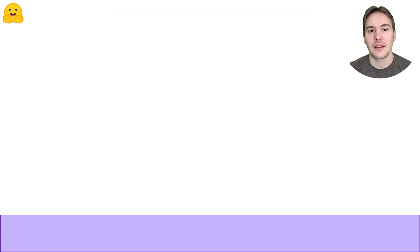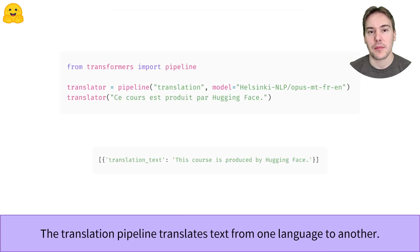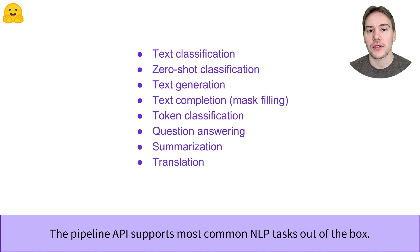Finally, the last task supported by the pipeline API is translation. Here we use a French-to-English model found on the model hub to get the English version of our input text. Here is a brief summary of all the tasks we've looked into in this video — try them out through the inference widgets in the model hub.